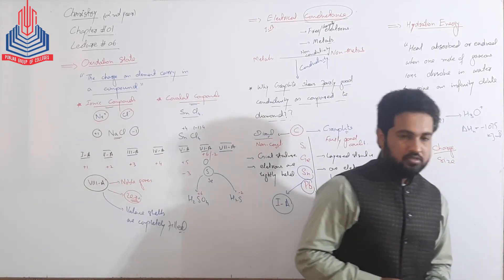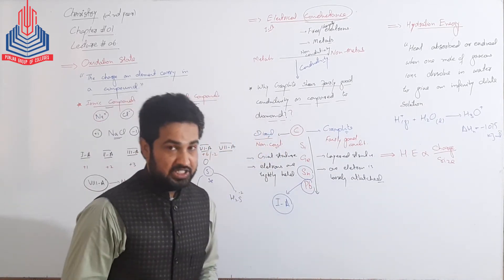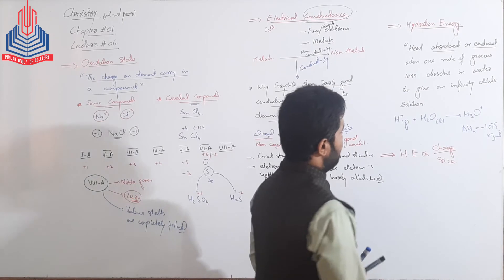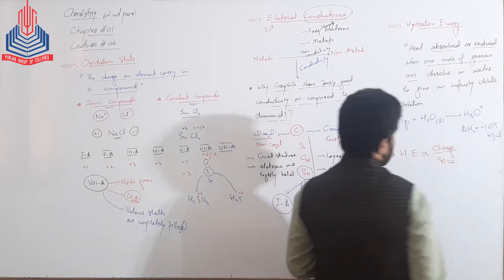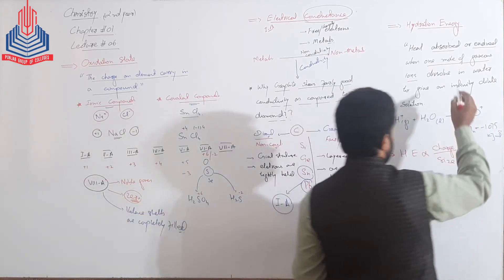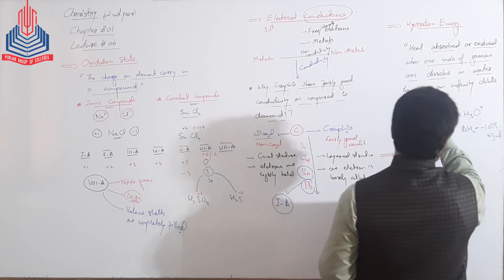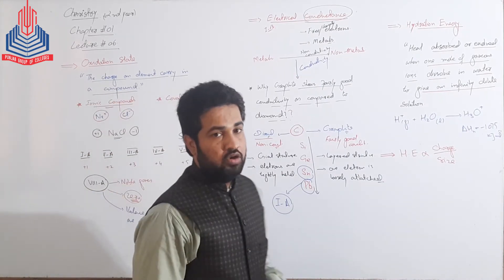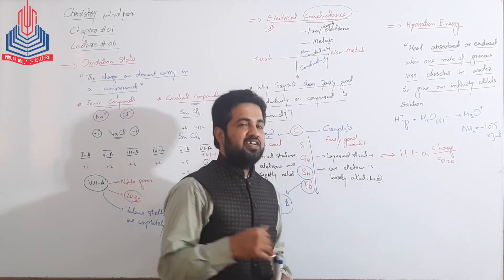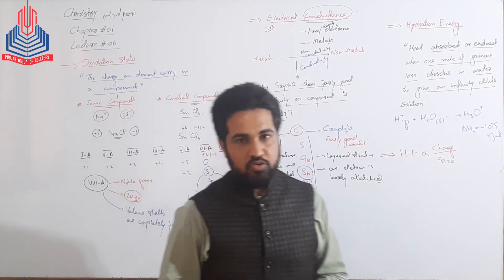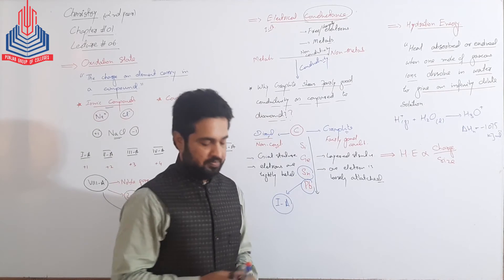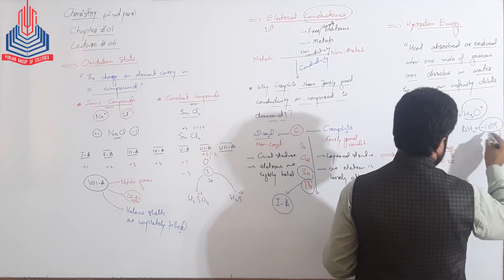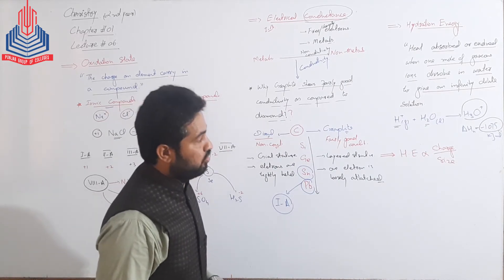Next and last property of periodicity is Hydration Energy۔ اسے define کریں تو: heat یا energy absorbed or evolved when one mole of gaseous ion is dissolved in water to give an infinitely dilute solution — یہ heat change Hydration Energy کہلاتا ہے۔ For example, اگر ہم hydrogen ion کو water میں dissolve کریں تو H3O+ بنے گا، اور اس case میں energy release ہوگی that will be minus 1075 kilo joule per mole۔